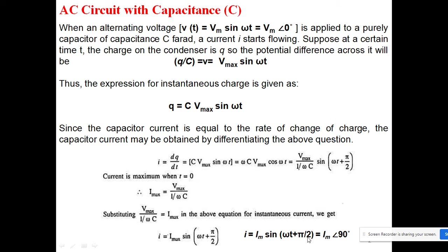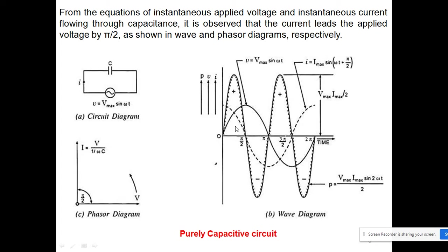The difference is π/2 — it means plus π/2 — which means the current is leading from the voltage. In phasor notation we can represent it like this. You can see the applied voltage and the instantaneous current flowing through the capacitance: it is observed that the current leads the applied voltage by π/2. In the waveform and phasor diagram, when the voltage is zero the current is maximum, confirming the 90-degree lead.